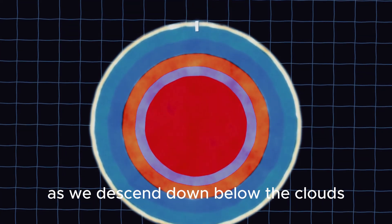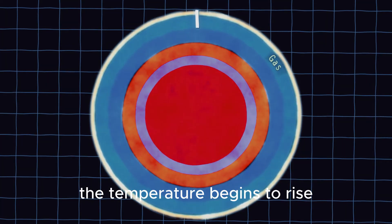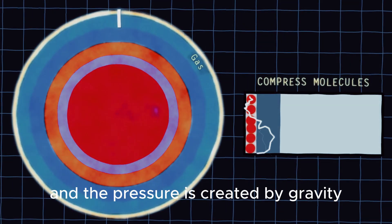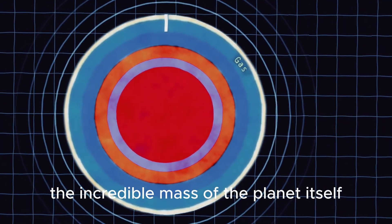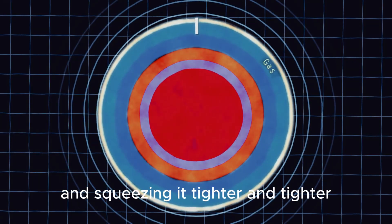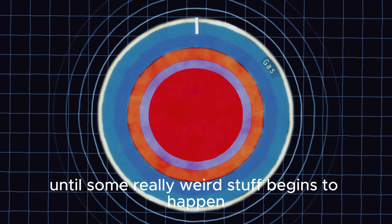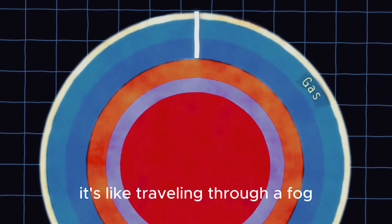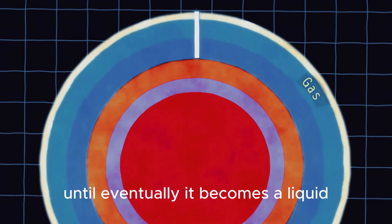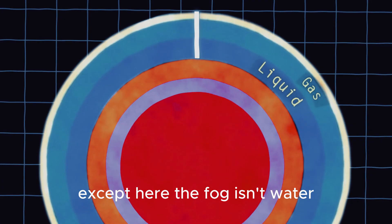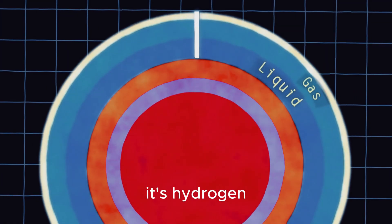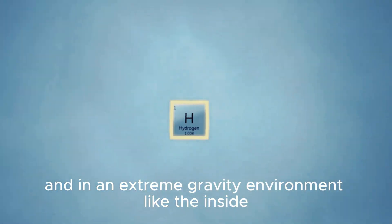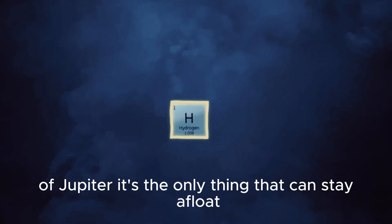As we descend down below the clouds and into the lower atmosphere of Jupiter, the temperature begins to rise. This heat is caused by pressure. When you compress molecules, you concentrate their energy, and the pressure is created by gravity. The incredible mass of the planet itself is pulling all of this material down and squeezing it tighter and tighter until some really weird stuff begins to happen. The further down we go into Jupiter's gravity well, the more the heat and pressure build up. It's like traveling through a fog that becomes thicker and thicker until eventually it becomes a liquid. Except here, the fog isn't water, it's hydrogen.